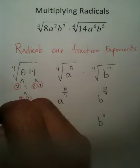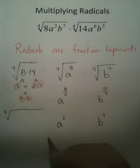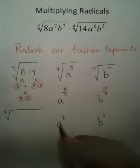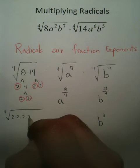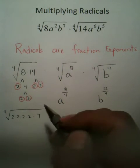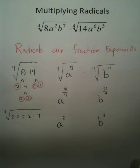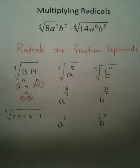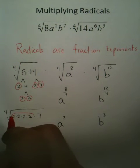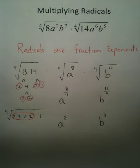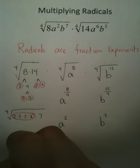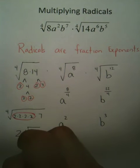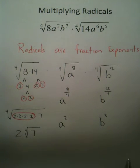Now that I have all these primes, what I've really done is helped break down the problem into something more easily accessible. I've got a 2, a 2, a 2, and a 2 — and I've got a 7. This index of 4 says I clearly need to have 4 twos in order to pull it out of the radical. And I do have 4 of them. So this turns into 2, with a 4th-root radical of 7.